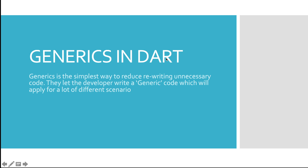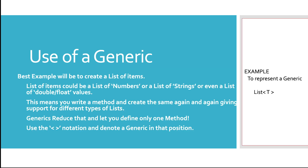So what exactly are generics? These are simple ways of creating and reducing or rewriting unnecessary code. Let's assume we have a simple way of writing a list of integers. There could be another method requiring a list of string values. Similarly, there could be another method requiring a list of double values. Technically, what is going to change? Just the type of the variable that is going to be accepted inside the list.